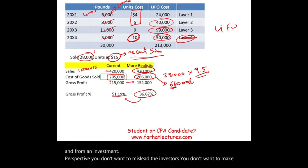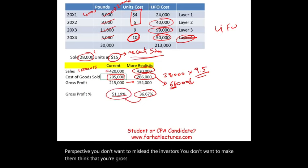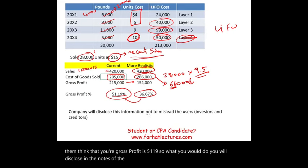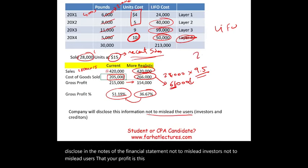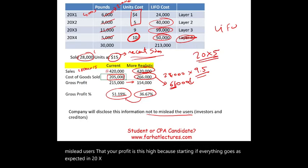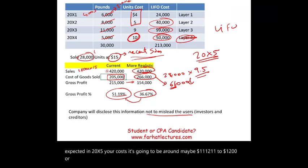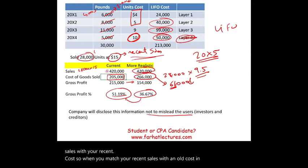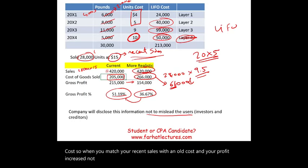You don't want to make investors think your gross profit margin is 51.19%. What you would do is disclose in the notes to the financial statements — not to mislead users — that your profit is this high only because of special circumstances. Starting in the next year, your cost will be around $11 to $14, and you'll need to match recent sales with recent cost.